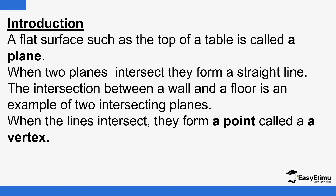When two planes intersect, they form a straight line. The intersection between walls and floors — if you look at where a wall is meeting the floor, that edge forms a line. Now when we have lines intersecting each other, they form a point.